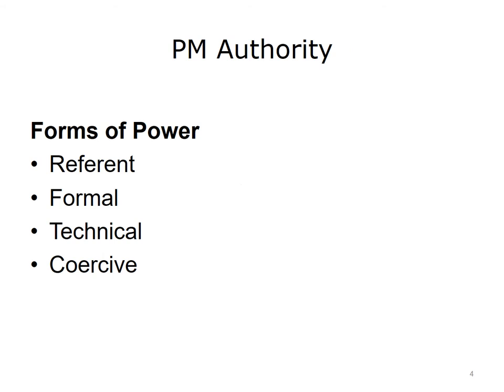When managing a project team, it is important to understand the different types of authority that exist. Team dynamics will be greatly impacted by how power is asserted. Referent power is individual power based on a high level of identification with, admiration of, or respect for the power holder. Formal power is based on rank or position — where the project manager has been assigned by senior management to be in charge. Technical power is based on strong technical skills in the project's domain. Coercive power is authority dependent on fear, suppression of free will, and/or use of punishments or threats.